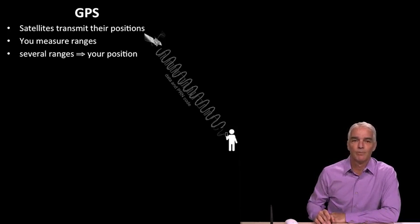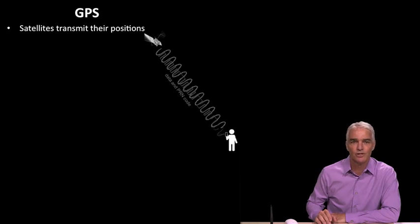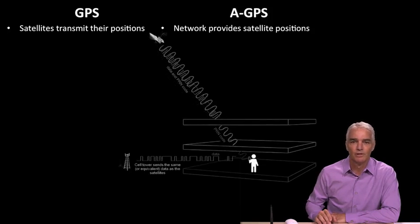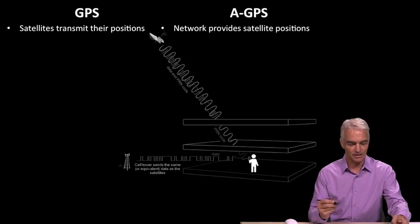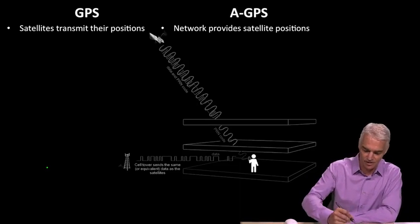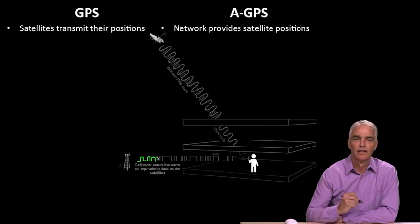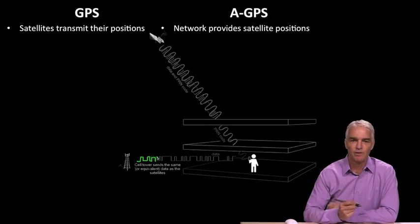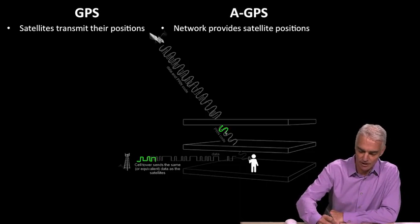Now, what about assisted GPS? Well, it's equally simple in concept. Instead of the satellites transmitting their positions, some network provides you with the satellite positions. And so we show this graphically like this. For now, we'll pretend that the data is coming in these little square waves. We know, of course, that the data is modulated as a BPSK signal on the sine wave, but just for the purposes of representation, we imagine data as a square wave in this picture, and the PRN code is the modulated sine wave here.